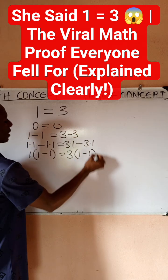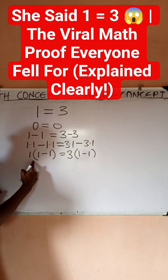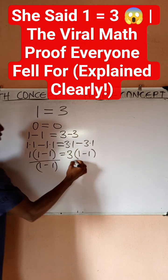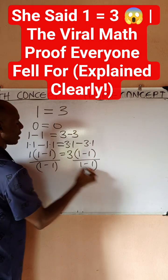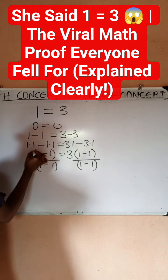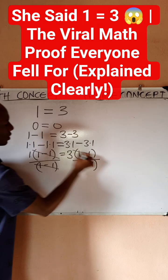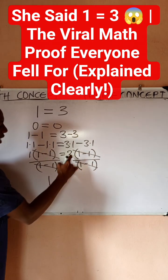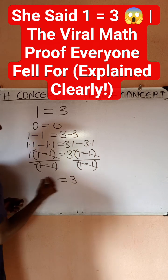And then you divide both sides by (1 minus 1). When you do this, this can go, this can go. Then you'll be left with 1, and then on this side you'll be left with 3. And she was able to show that 1 is equal to 3.